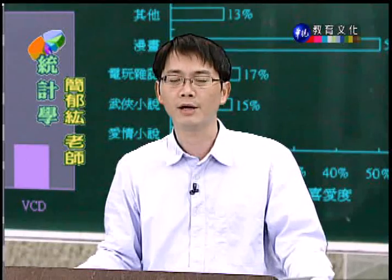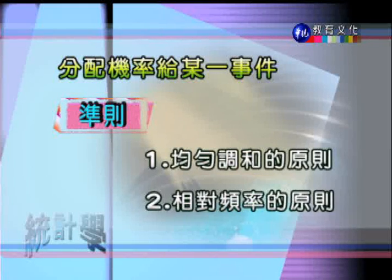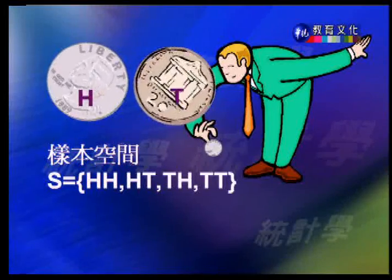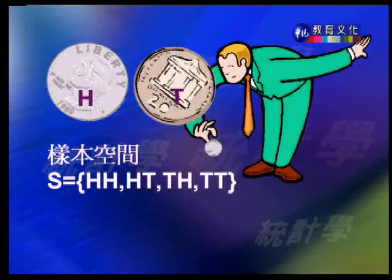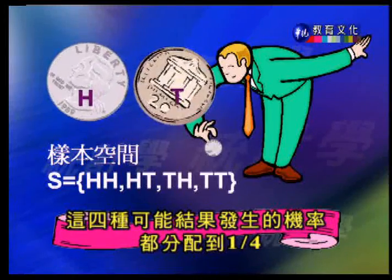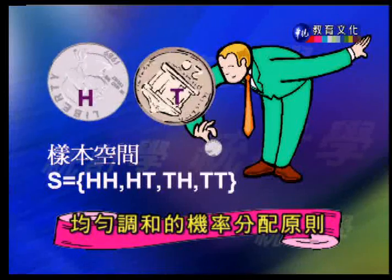在把數值賦予到事件上的過程中，必須有兩個原則：第一個叫均勻調和原則，第二個叫相對頻率原則。以投一個公正的硬幣兩次為例，樣本空間為 {HH, HT, TH, TT}（H 代表正面，T 代表反面）。由於是公正硬幣，很合理地把四分之一賦予每個樣本點，這就是均勻調和的機率分配原則，即把1分配到這四個樣本點上。